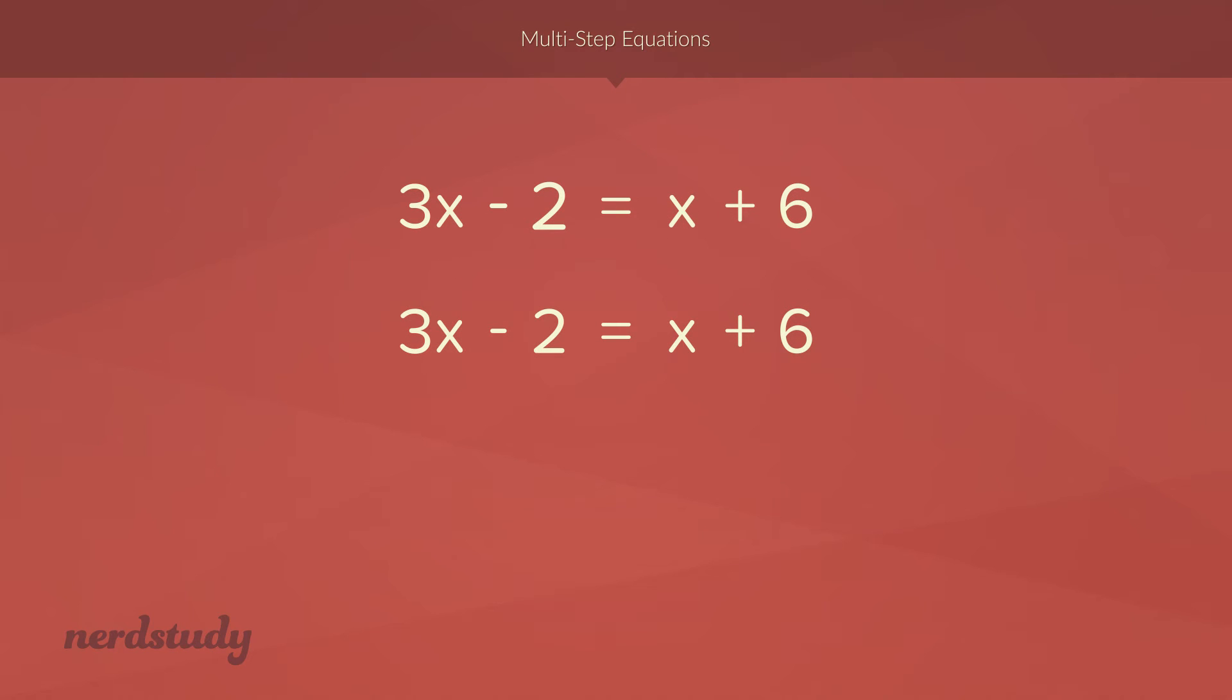So, first off, let's deal with this minus 2 on the left side by adding 2 to both sides. We simplify to get 3x equals x plus 8. And now, let's deal with the x on the right side. This x is being added to 8. So, to get rid of this, we would have to subtract x on both sides.